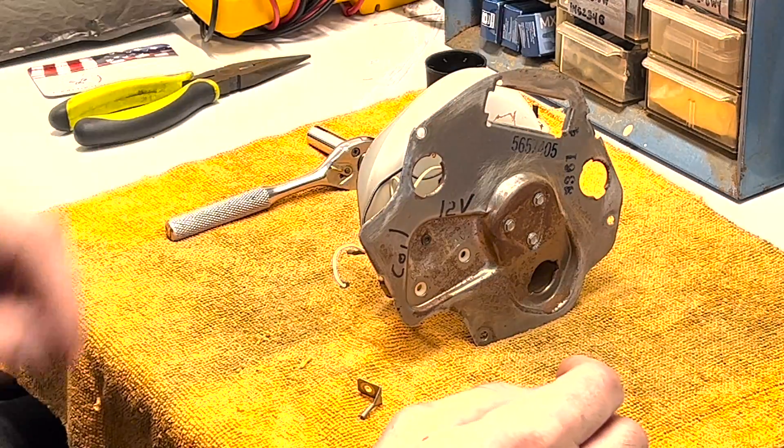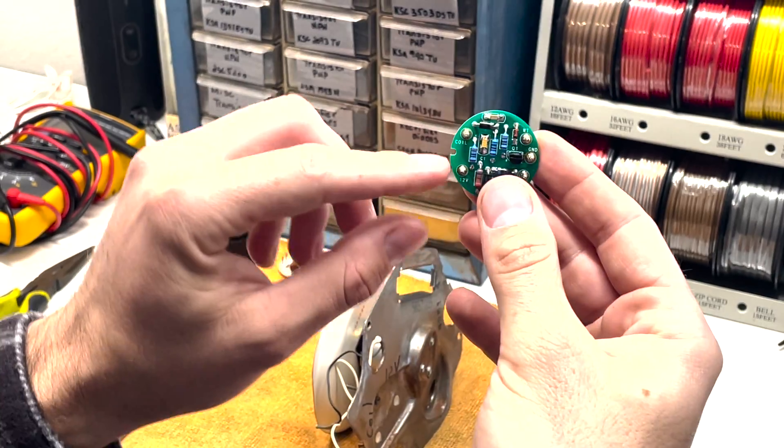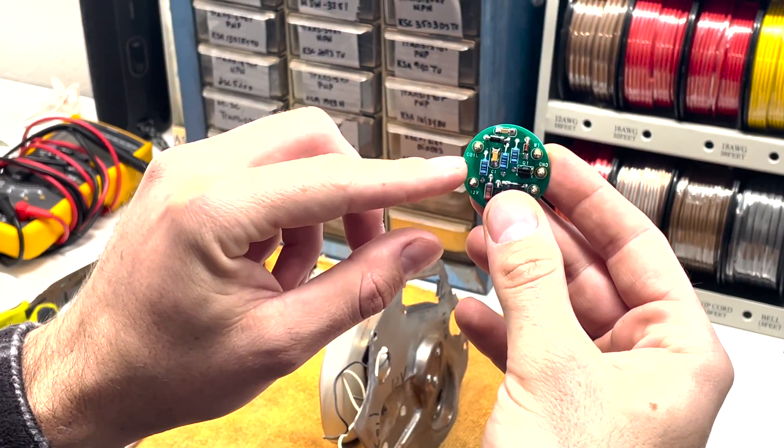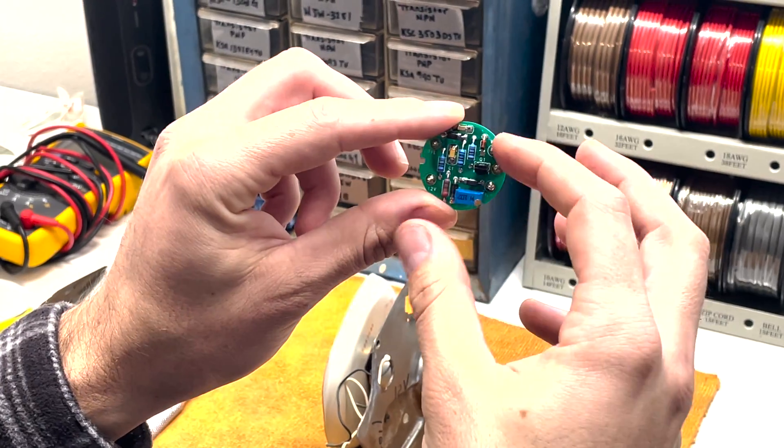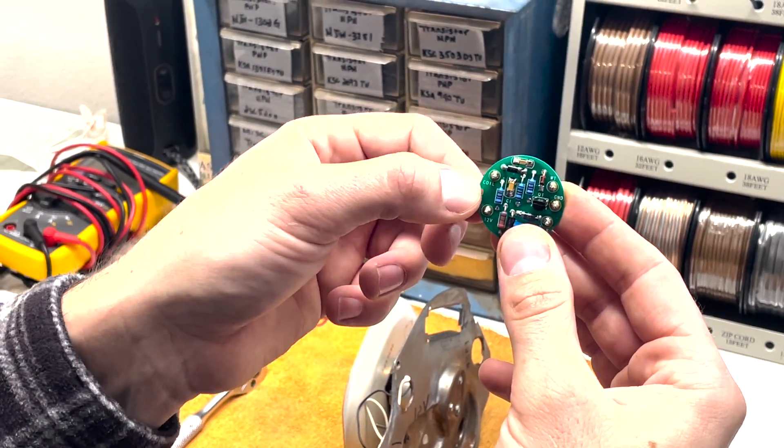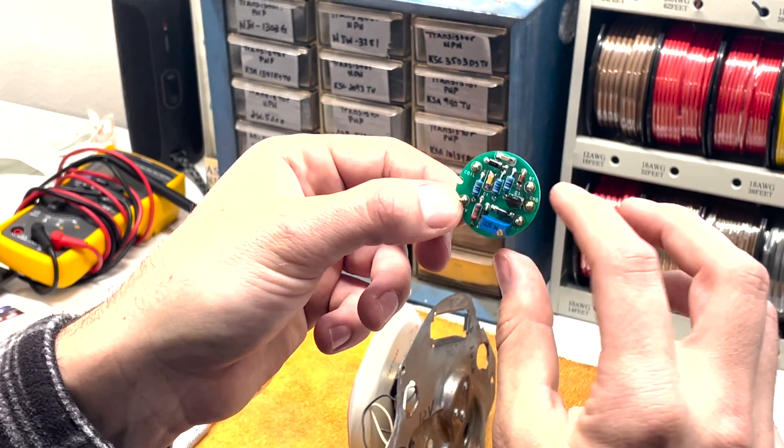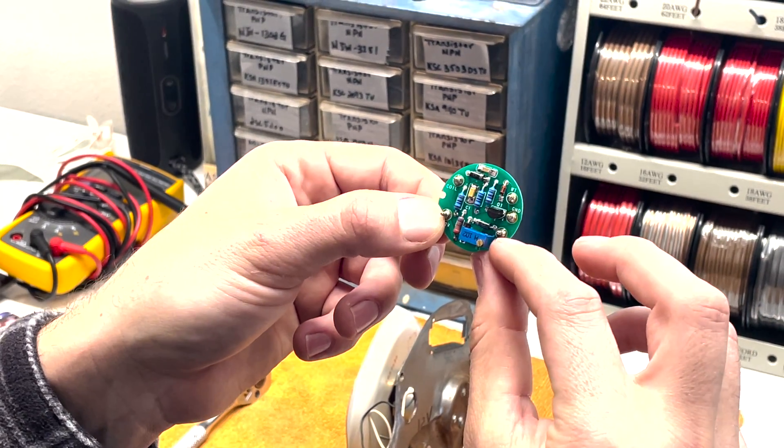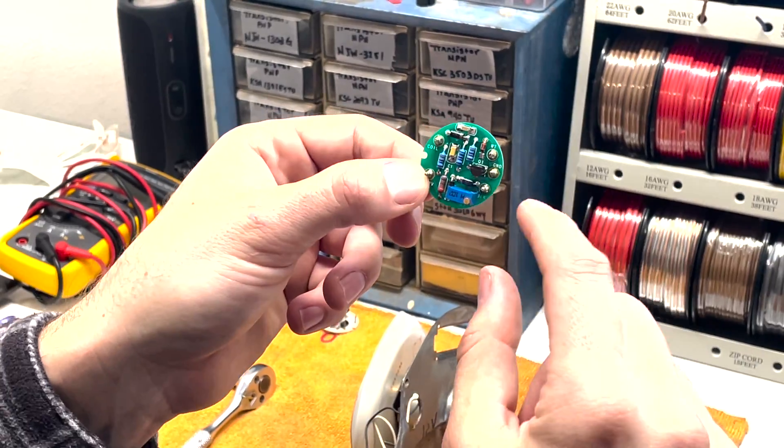So once that's out, you're ready for your new circuit board. You can see on the new circuit board here that everything is labeled and it tells you where everything goes, which is super convenient. Got the coil wire, your 12 volts, the white wire, the black wire, the two wires that go to the movement, and then your ground, and that's it.